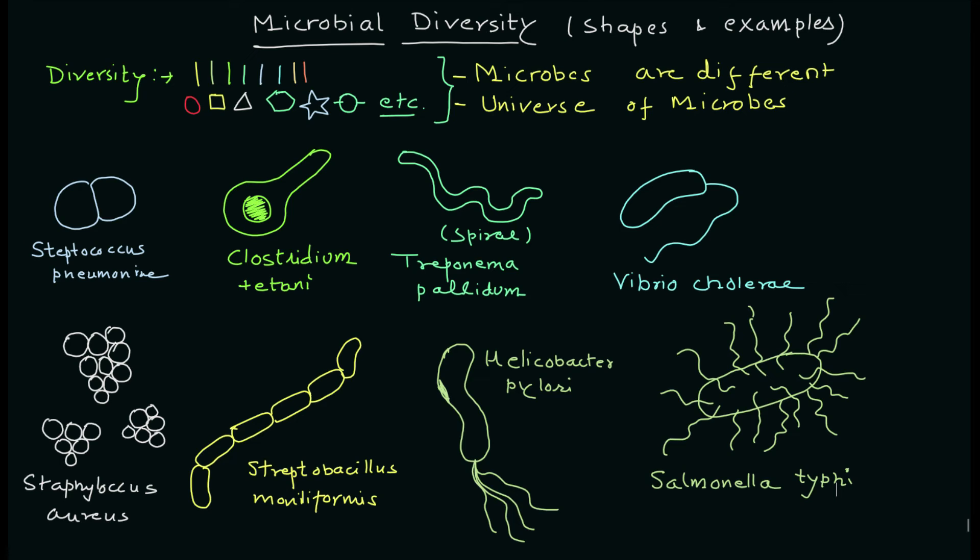We have only talked about bacteria and you can see how much diversification there can be. Even in genera you have different types of shapes, and even in species you will have different features — that's why they are divided into different groups. But what they have in common is what puts them in one genus. So similarities are also there, while at the same time they can have diversification. In this video we have tried to understand the diversification in microbes based on their cell shape and also how they form different types of structures when they combine together, which you can see under the microscope.